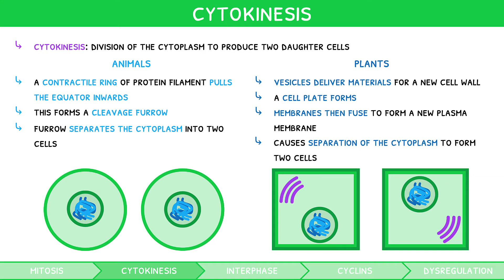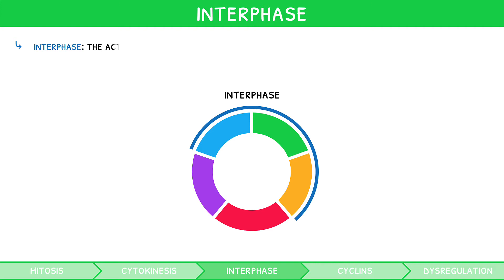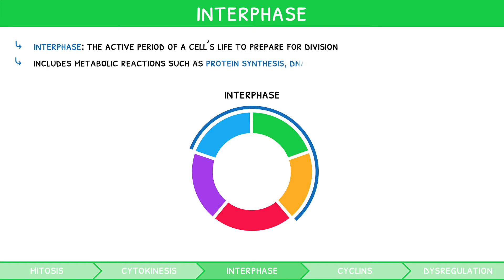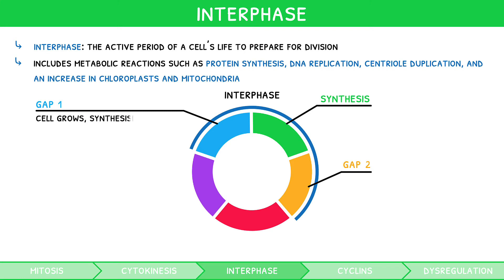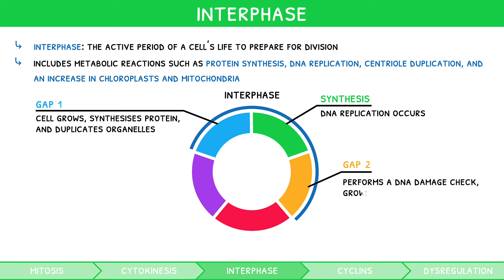After a cell divides its nucleus by mitosis, then its cytoplasm by cytokinesis, the new daughter cells must prepare to divide themselves — this is the role of interphase. Interphase is regarded as the active period of a cell's life to prepare for division, including metabolic reactions such as protein synthesis, DNA replication, centriole duplication, and an increase in chloroplasts and mitochondria. During GAP1, the cell grows, synthesizes protein, and duplicates organelles. During synthesis, DNA replication occurs. During GAP2, the cell performs a DNA damage check, grows further, synthesizes further proteins, and prepares for cell division.